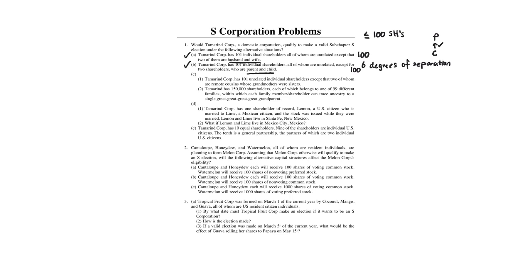In C1, the same corporation has 101 unrelated individual shareholders except two of them are remote cousins whose grandmothers were sisters. We're looking at the six degrees of separation. Drawing it out: X and Y, the parent of X, the grandparent of X — and the grandparents are sisters — the grandparent of Y, the parent of Y, and then Y. That's five degrees of separation, so we are within six. The two cousins count as one shareholder, making it 100.